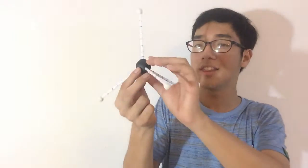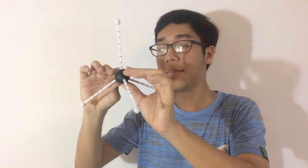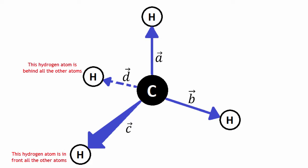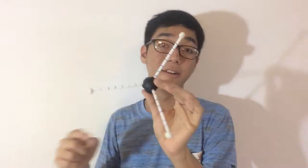If we let the carbon atom — the black thing here — be at the center, at the origin, we can describe where each of the hydrogen atoms are in the molecule of methane, or CH4. The location of each hydrogen atom with respect to the carbon atom can be represented in terms of vectors — going from the carbon to each hydrogen atom.